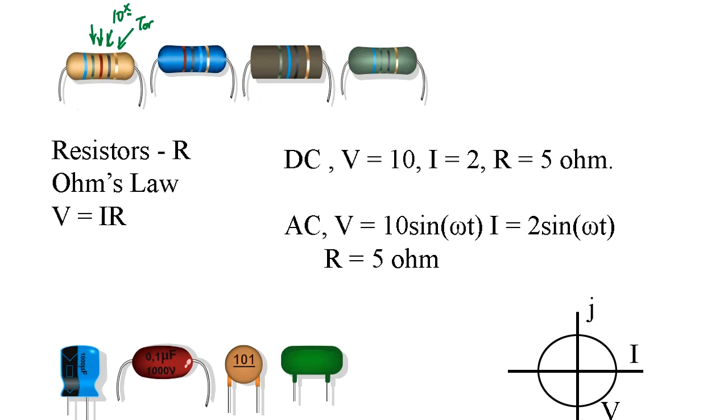Those resistor components act for direct current and alternate current in the same way. There is an Ohm's law. Ohm's law is the basic of circuit analysis. Voltage equals current times resistance. For example, 10 volt and the current 2 amp, then it's 5 ohms.